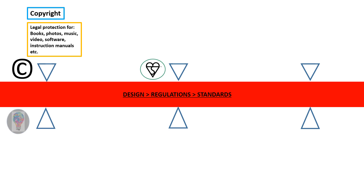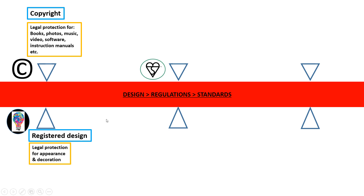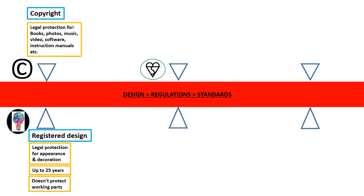The next one is registered design. This is protection for the appearance and decoration of a design, and you can have it for up to 25 years, but it doesn't include working parts. A good example is the shoe Crocs — the actual 3D geometric shape of the Croc cannot be copied because it's registered, protecting its 3D geometric shape, appearance, and decoration.